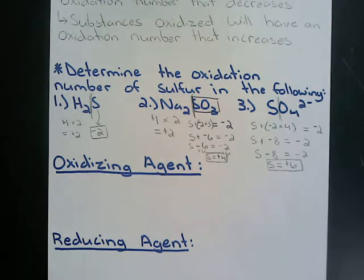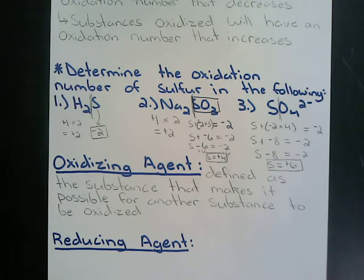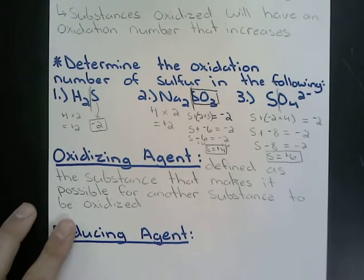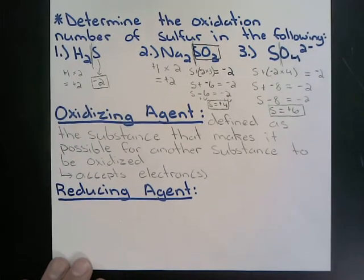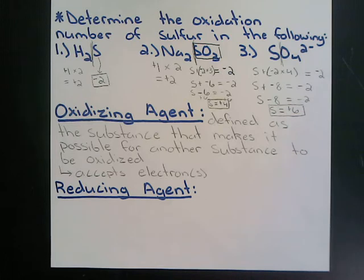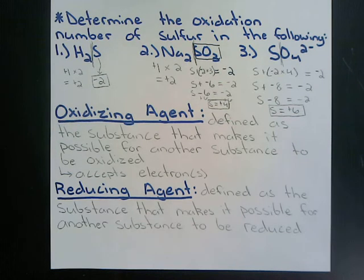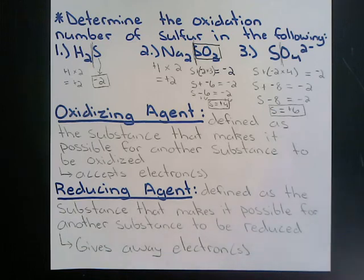Now we want to discuss oxidizing and reducing agents. An oxidizing agent is defined as the substance that makes it possible for another substance to be oxidized — in other words, the oxidizing agent is the substance that gets reduced or accepts electrons. A reducing agent is defined as the substance that makes it possible for another substance to be reduced — it is the substance that gets oxidized or gives away electrons.